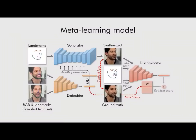Better identity preservation is achieved by having a trainable embedding vector inside the discriminator for each training video. For more details, please refer to the paper.